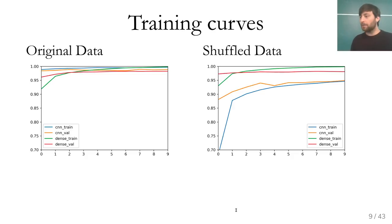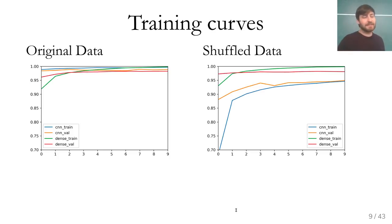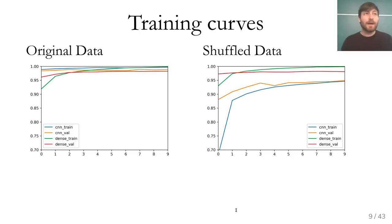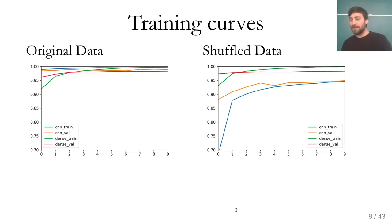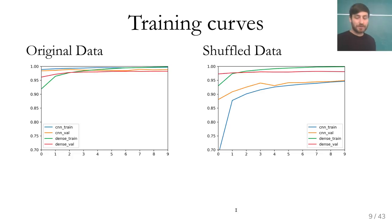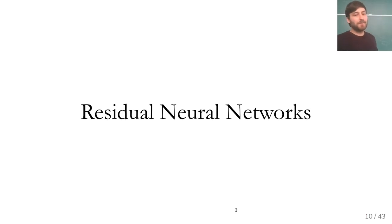The next thing I want to talk about is more advanced techniques for building neural networks. Last time we talked about dropout and batch normalization. The last important one I want to cover is residual networks or residual layers.